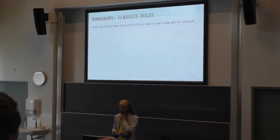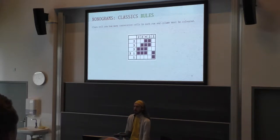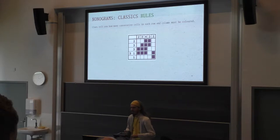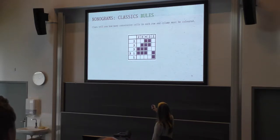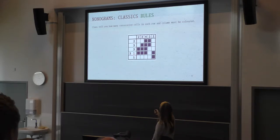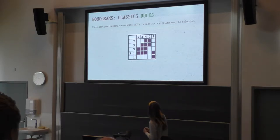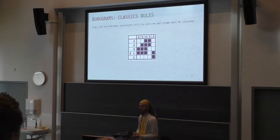The way that you solve a nonogram is by following the clues per row and column. For instance, this is a solved nonogram. The clues just tell you: in this first row there should be two consecutive cells which are colored in — and indeed you see here two cells which are colored and they are consecutive. Here there should be three consecutive cells colored. Here there should be three consecutive cells colored, and somewhere else one consecutive cell colored, separated by at least one uncolored cell. The same applies for all the columns. And yes — the order should be respected.